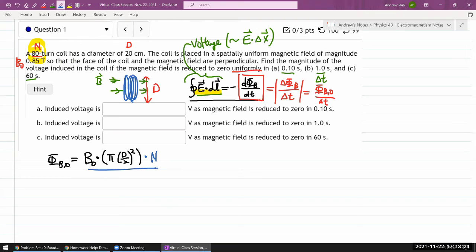So, the rate of change of magnetic flux for, let's say, one of these, maybe one involving delta t equals one second, that's simply going to be b0 times pi r squared times n over delta t.